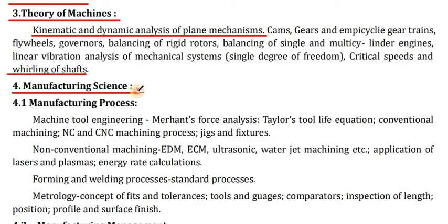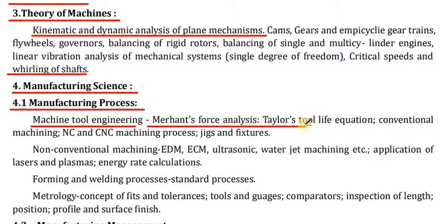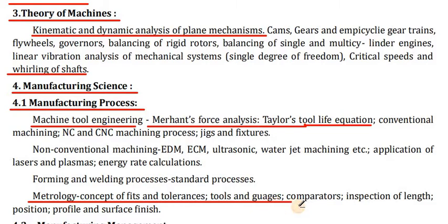In point number 4 — Manufacturing Science. Under 4.1 Manufacturing Process and Machine Tool Engineering: Merchant's force analysis, Taylor's tool life equation, conventional machining, NC and CNC machining processes, jigs and fixtures, non-conventional machining — EDM, ECM, ultrasonic, water jet machining, etc. Applications of lasers and plasma, energy rate calculations, forming and welding processes, standard processes, metrological concepts of fits and tolerance, tools and gauges, inspection of length, positions, profile, and surface finish.